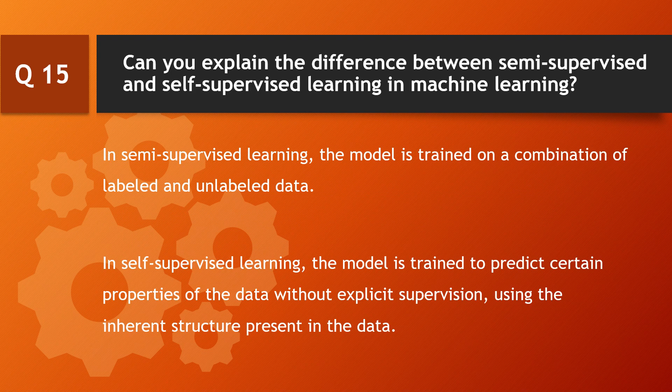Question: can you explain the difference between semi-supervised and self-supervised learning in machine learning? In semi-supervised learning, the model is trained on a combination of labeled and unlabeled data. In self-supervised learning, the model is trained to predict certain properties of the data without explicit supervision, using the inherent structure present in the data.